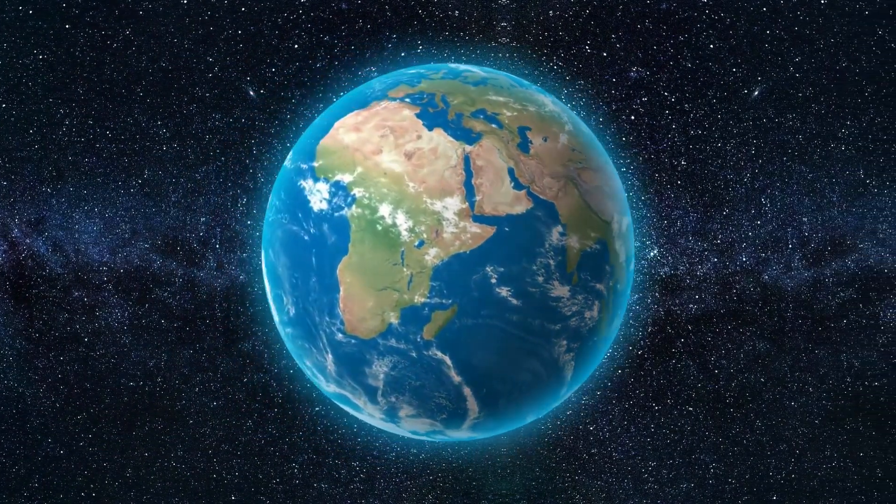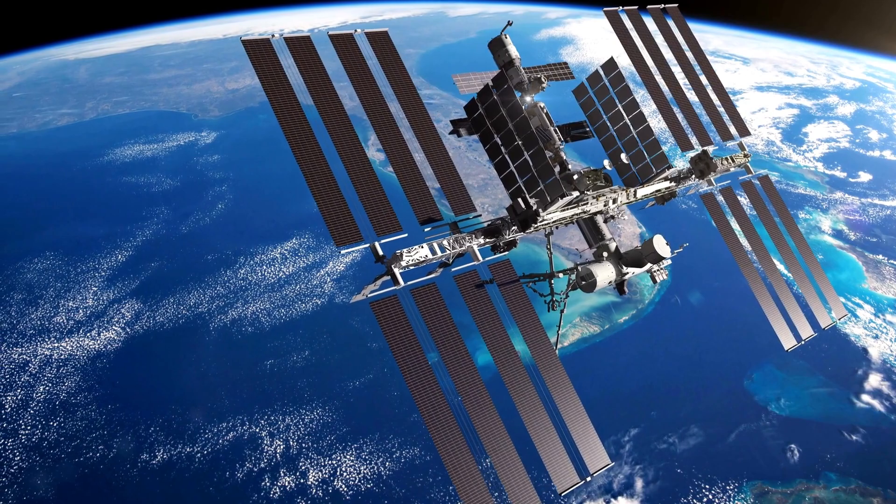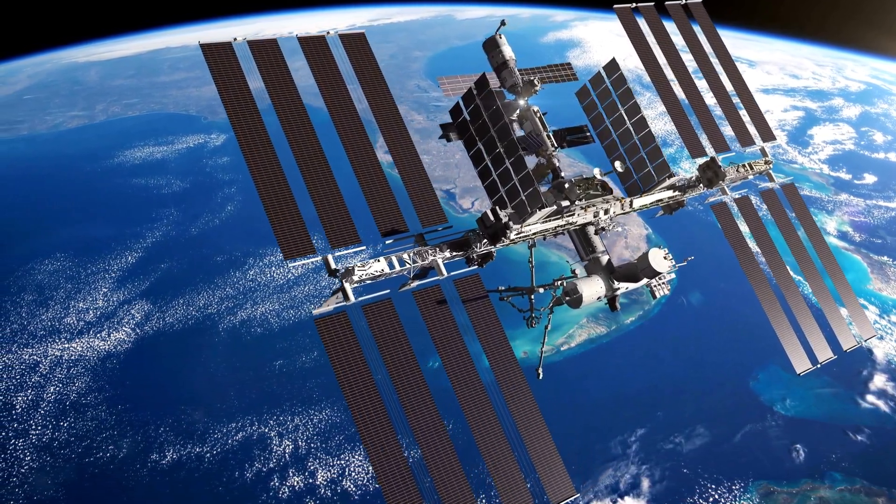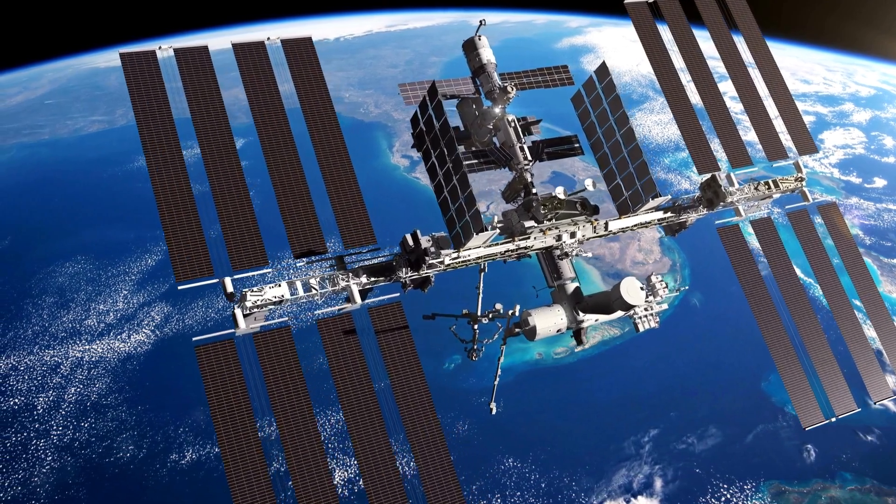With a radius of 3,959 miles, Earth is the fifth largest planet in our solar system, and it's the only one known for sure to have liquid water on its surface.